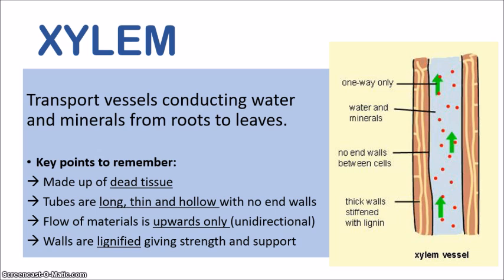The second point to note is that the tubes are long, thin, and hollow with no end walls. This facilitates a smooth upward movement of the water. The flow of materials is upwards only, meaning that it is unidirectional — going from the roots to the leaves. This long, thin, hollow tube facilitates that movement and the absence of end walls prevents any obstruction of the water flow.